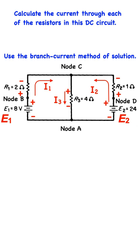A closed loop is any continuous connection of branches that allows us to trace a path which leaves a point in one direction and returns to the same point from another direction without leaving the network. Now, we apply Kirchhoff's voltage law around each closed loop. For loop ABCA, or loop 1.